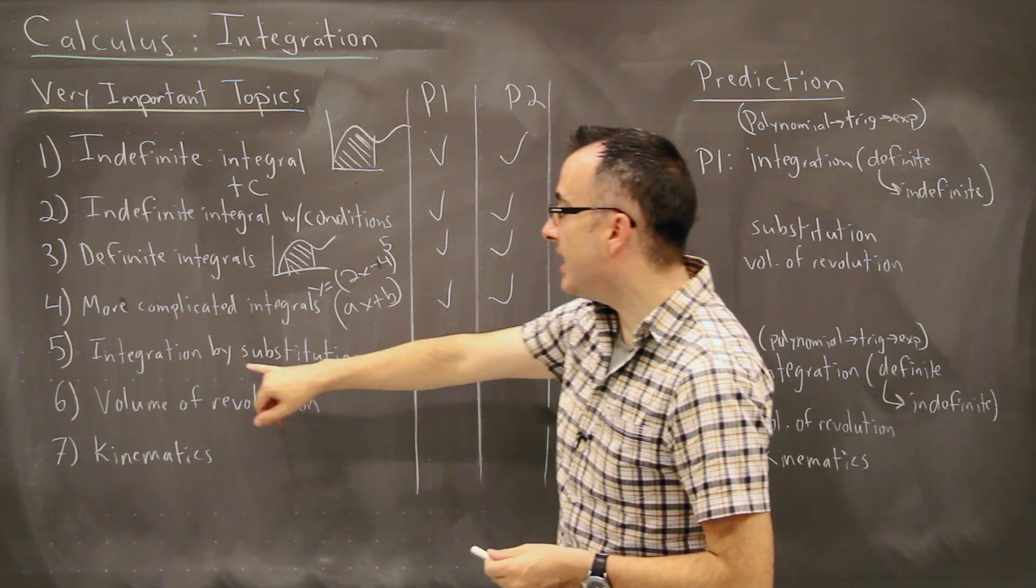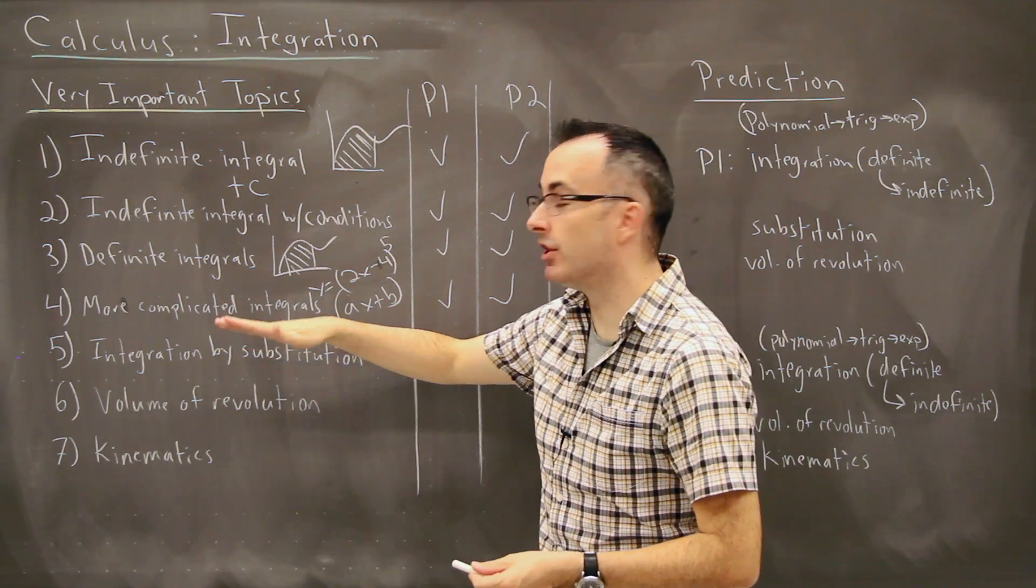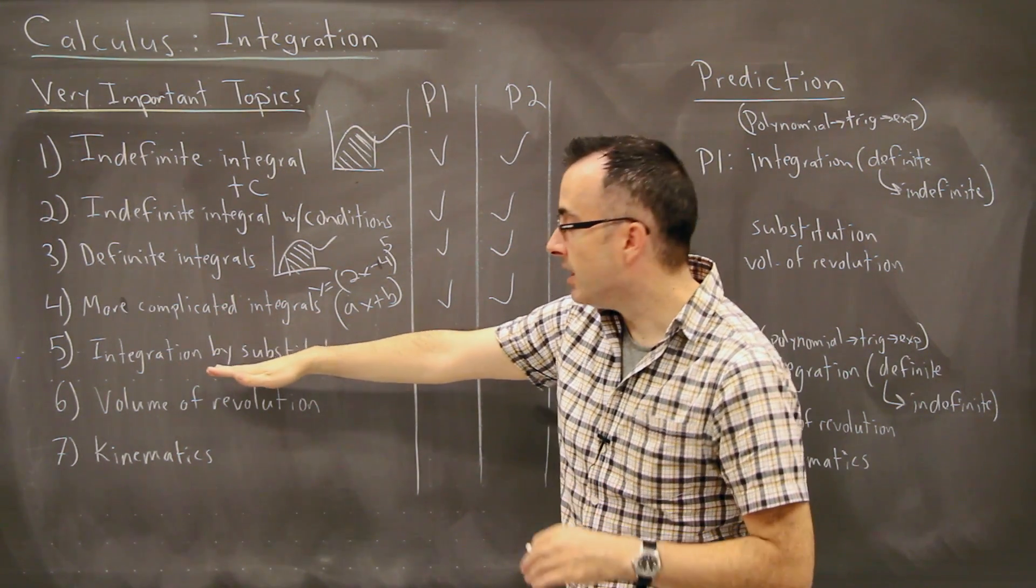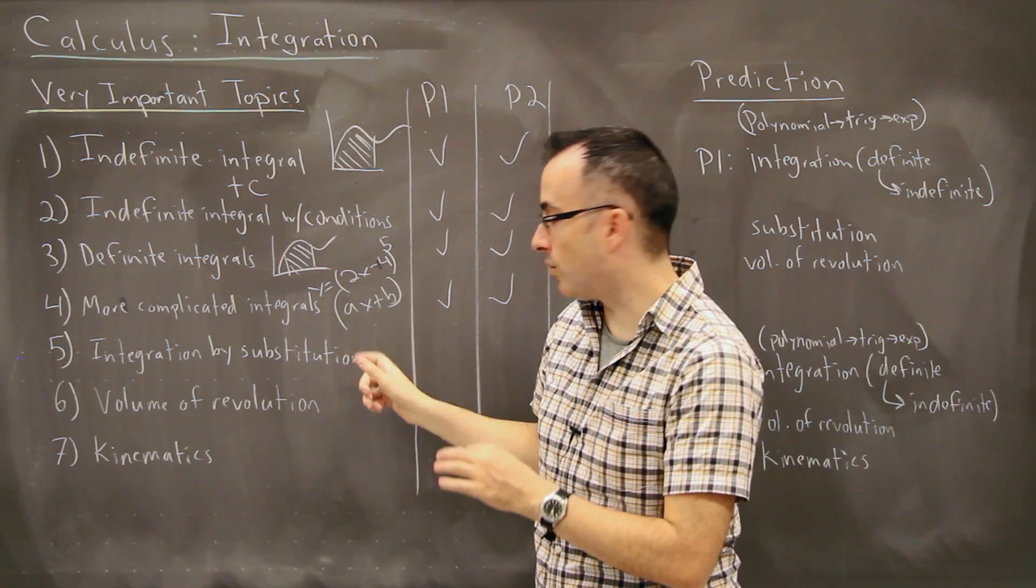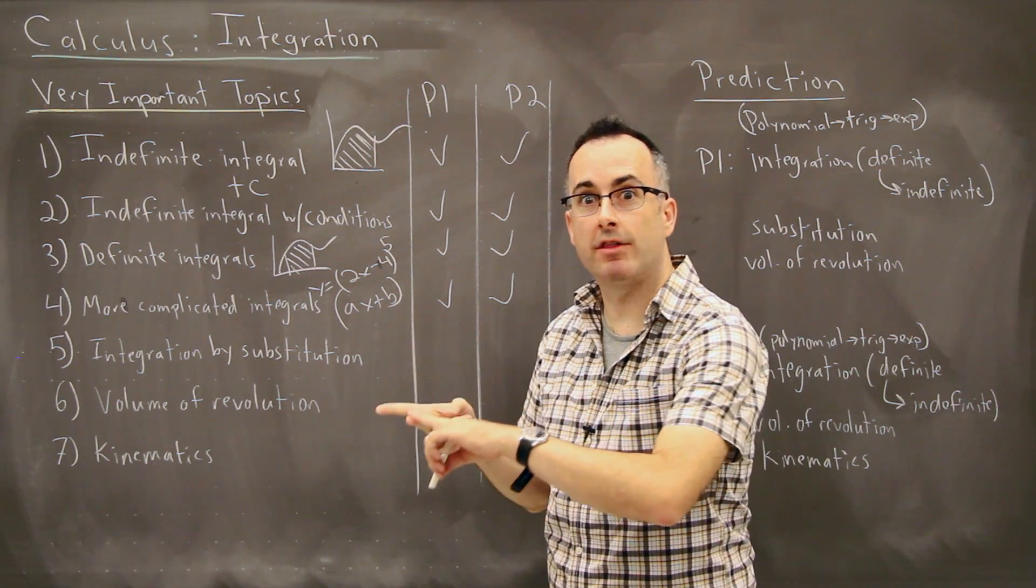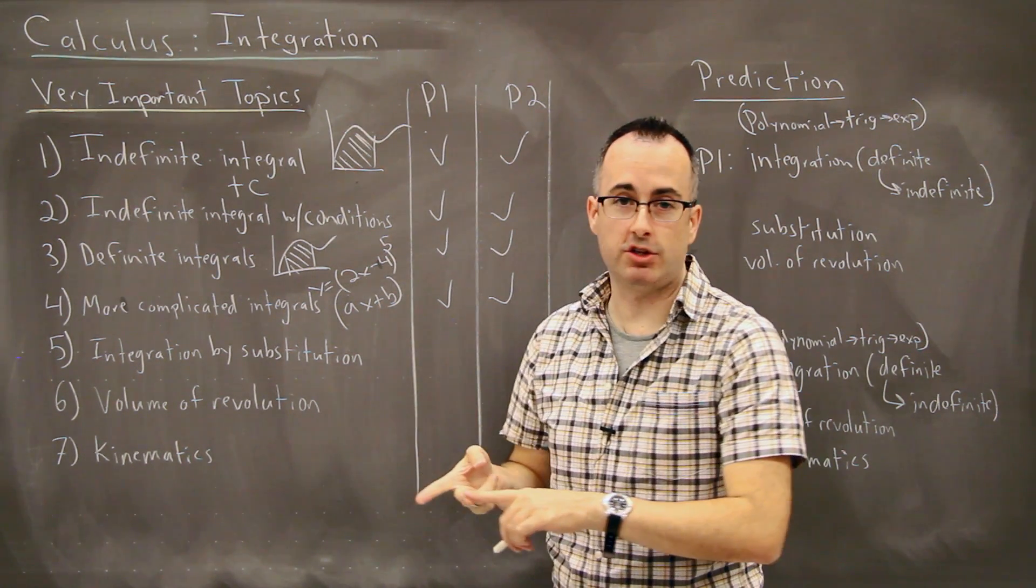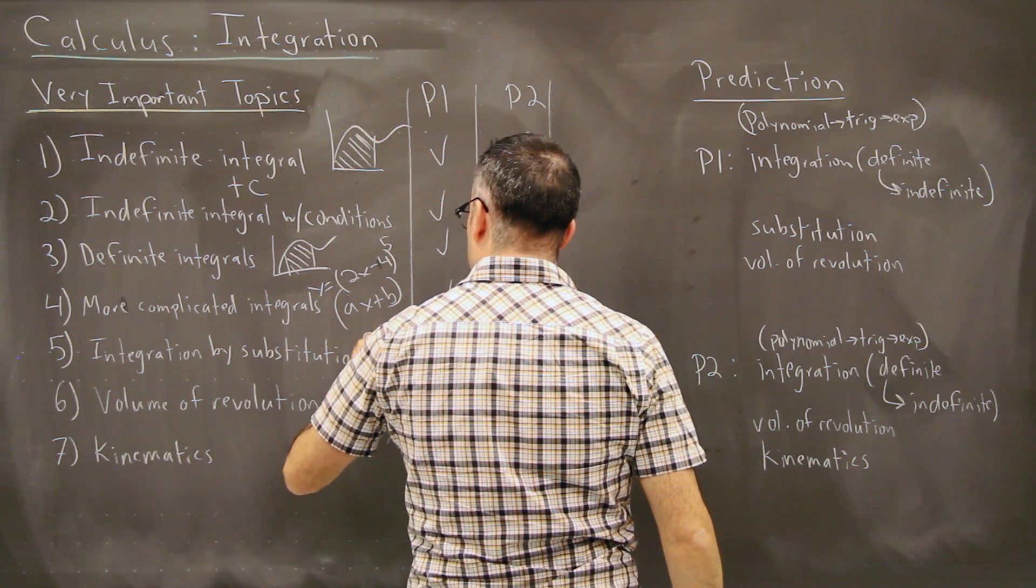And then we have integration by substitution. A lot of students think this is the hardest one. It often looks the grossest for sure. This one here is one where you're trying to find, you've got two different functions going on at the same time, and you're trying to find where one is a derivative of the other one. And then there's a little notation you can use that actually works with something called integral of F U D U.